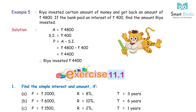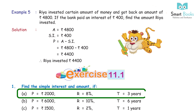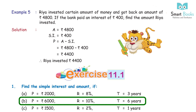Exercise 11.1, Question 1: Find the simple interest and amount. (A) P = Rs 2,000, R = 8%, T = 3 years. Answer: Amount = Rs 2,480, Interest = Rs 480. (B) P = Rs 6,000, R = 10%, T = 6 years. Answer: Amount = Rs 9,600, Interest = Rs 3,600.